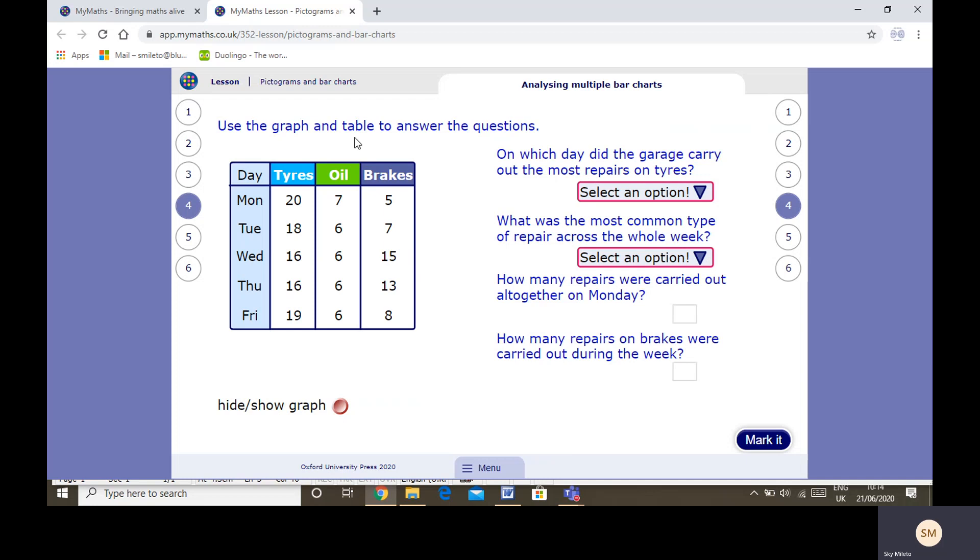We can use this table and graph to answer the questions. On which day did the garage carry out the most repairs on tires? So we're just looking at the tires column here, and we can see that the highest number is 20, so it must be Monday. Which was the most common type of repair across the whole week? Now we could add them all up, add all the tires up, add all the oils up, add all the brakes up, but I can see that all of these are in using tens and ones, whereas not all of the others are using tens and ones, so I know that it must be tires. How many repairs were carried out all together on Monday? 20 plus 7 plus 5, and 20 plus 7 plus 5 is 32.